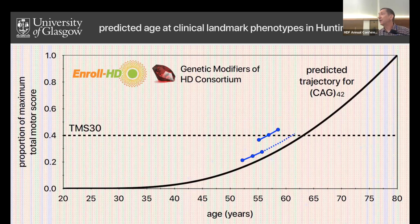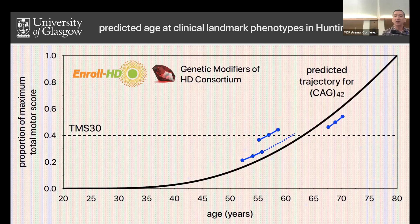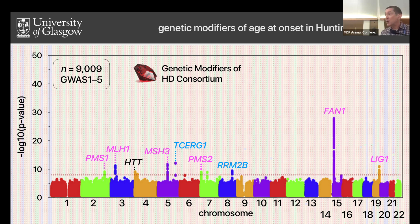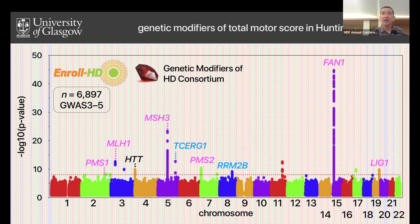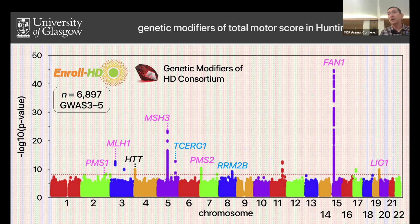We can work backwards as well. For a patient who was already past the threshold, we can extrapolate backwards and predict that they crossed that line later than expected. We can use this type of phenotype in the genetic modifier study. Based on 9,000 individuals for age of onset, and about 7,000 for the longitudinal data, the average signal strength has actually gone up — many of these peaks are higher even though there are fewer individuals. Using that rich longitudinal data with more objective measures increases the power to find genetic modifiers.